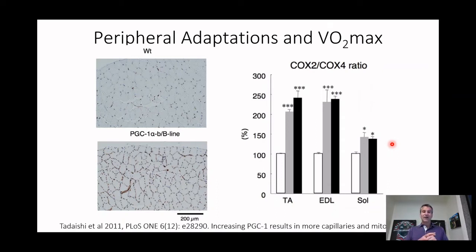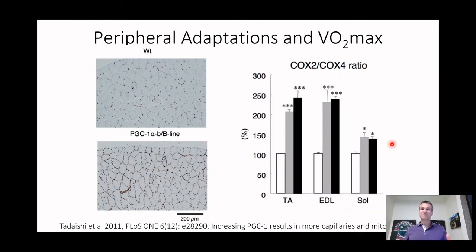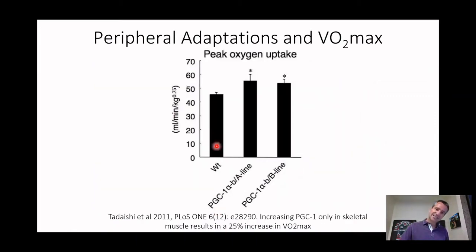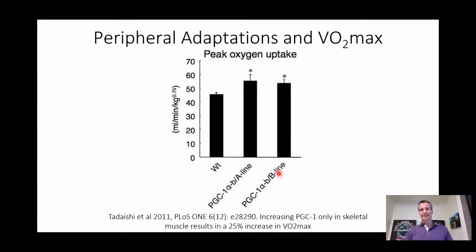This is a beautiful experimental setup because whenever you exercise you get both a central and a peripheral adaptation. But by over-expressing PGC-1α, they achieved a big increase in peripheral adaptation without changing the central adaptation — allowing them to establish how much adaptation is due to peripheral versus central factors. When they measured VO2 max, the wild-type was about 45, and the PGC-1α over-expressors — despite doubling mitochondrial mass and a huge increase in capillaries — showed only about a 25% increase in VO2 max.